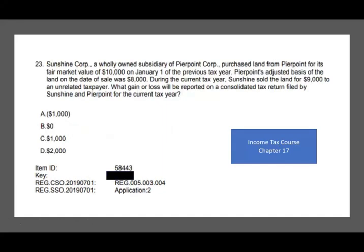Question 23: Sunshine Corporation, a wholly owned subsidiary of Pierport Corp, purchased land from Pierport for its fair market value of $10,000 on January 1st of the prior tax year. Pierport's adjusted basis of the land on the date of sale was $8,000. So they sold the land for $10,000 to a related party. During the current tax year, Sunshine sold the land for $9,000 to an unrelated party. What gain or loss will be reported on a consolidated tax return filed by Sunshine and Pierport for the current year?